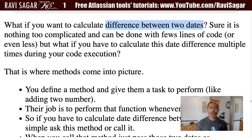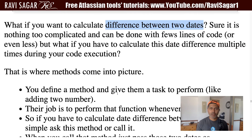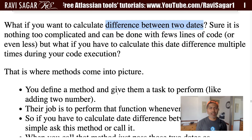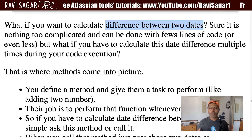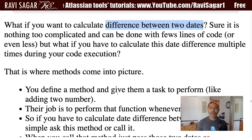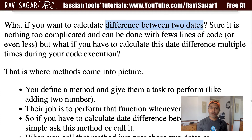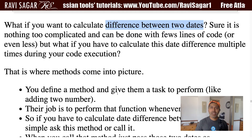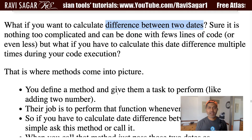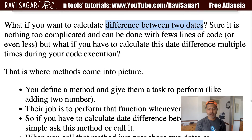This is all good. But what if you want to perform the same calculation multiple times? When you have to add two numbers or perform a more complicated calculation like the difference between two dates, you can write code for it. But when you have to do the same thing over and over again, then you can define or create a method for it.